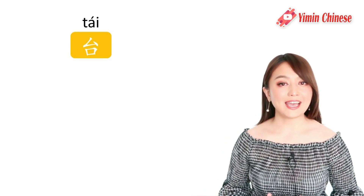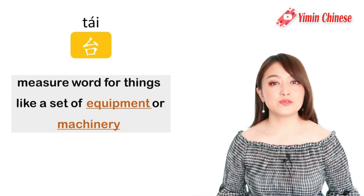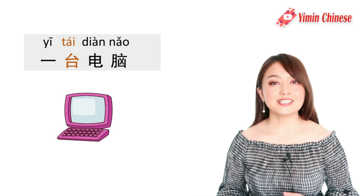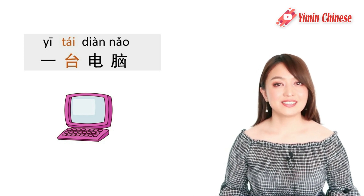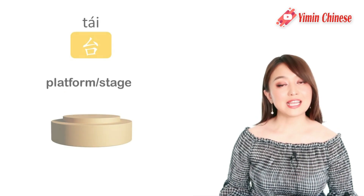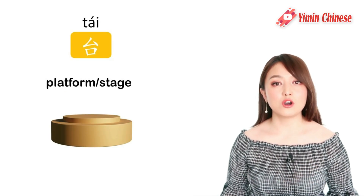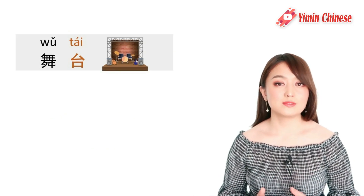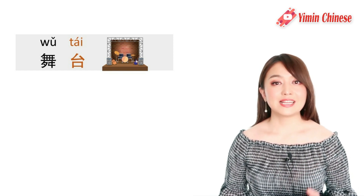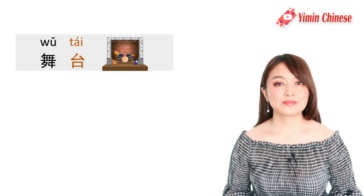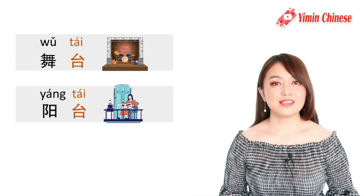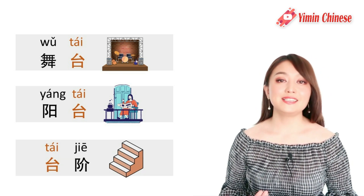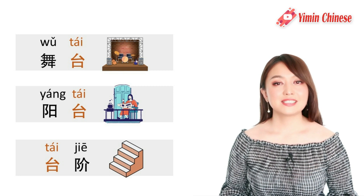Next measure word is 台. 台 is a measure word for things like a set of equipment or machinery, like 一台电脑, a computer. 台 itself means 'platform' or 'stage'. So we can see this character in words such as 舞台, a performance stage; 阳台, which means balcony; or 台阶, which means stairs.